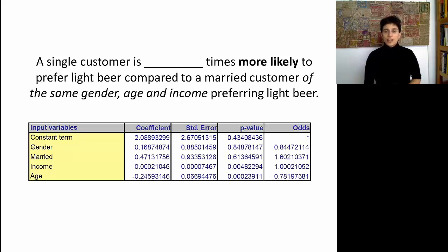Now try and do this with a marital status dummy. Look at the output, try and figure out what should be the right number right here. How much more likely is a single customer to prefer light beer compared to a married customer who has the same profile otherwise?